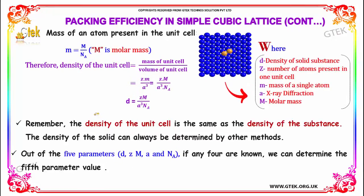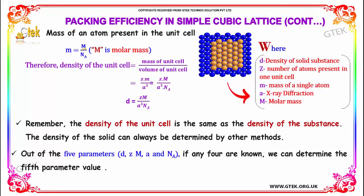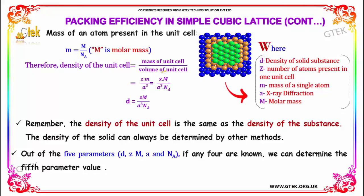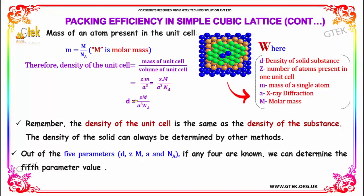The mass of each atom present in the unit cell can be calculated using M divided by Nₐ, where M is the molar mass. Density equals mass of the unit cell divided by volume of the unit cell, which is Z·M divided by A³. Replacing M per atom accordingly, density is given by ZM divided by A³·Nₐ.